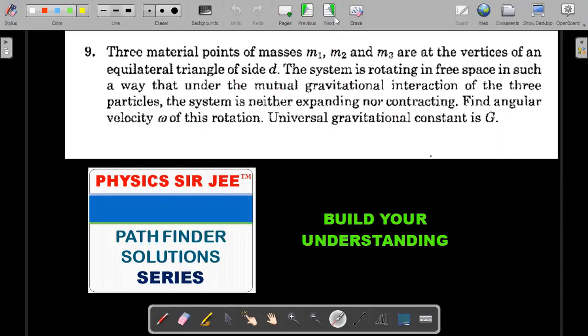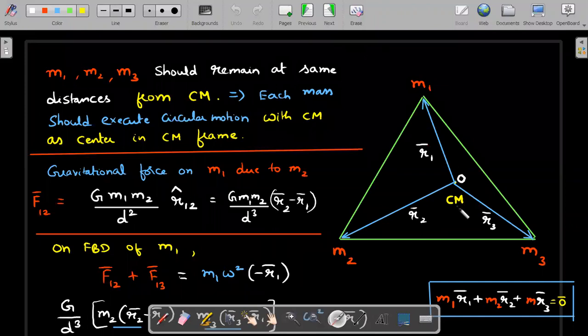So here the solution. The thing that you need to take into account is that the particular system is not expanding or contracting. That means you could say because of the net mutual force of interaction is just gravitational in nature, the external force on the system is zero. So I would say that M1, M2 and M3 should remain at same distances from center of mass.